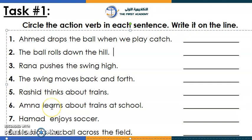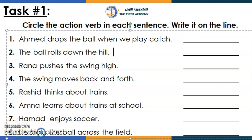Well done — circle 'learns' and write it. Let's go to number seven: 'Hamad enjoys soccer.' Where's the action verb? 'Enjoys' — excellent, well done! Let's move to the last one: 'He kicks the ball across the field.' Where's the action verb? 'Kicks' — circle it and write it over here. Well done!